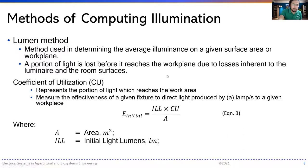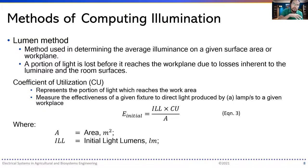The lumen method is the second method, used to determine the average illuminance on a given surface area or work plane. Some light is lost before it reaches the work plane due to losses inherent in the luminaire and room surfaces. This leads to the coefficient of utilization (CU), which represents the portion of light that reaches the work area. The CU measures the effectiveness of a given fixture to direct light to a workplace.